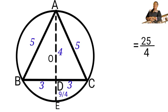Remember that we are to find the radius of this circle. We have gotten the diameter to be 25 over 4.